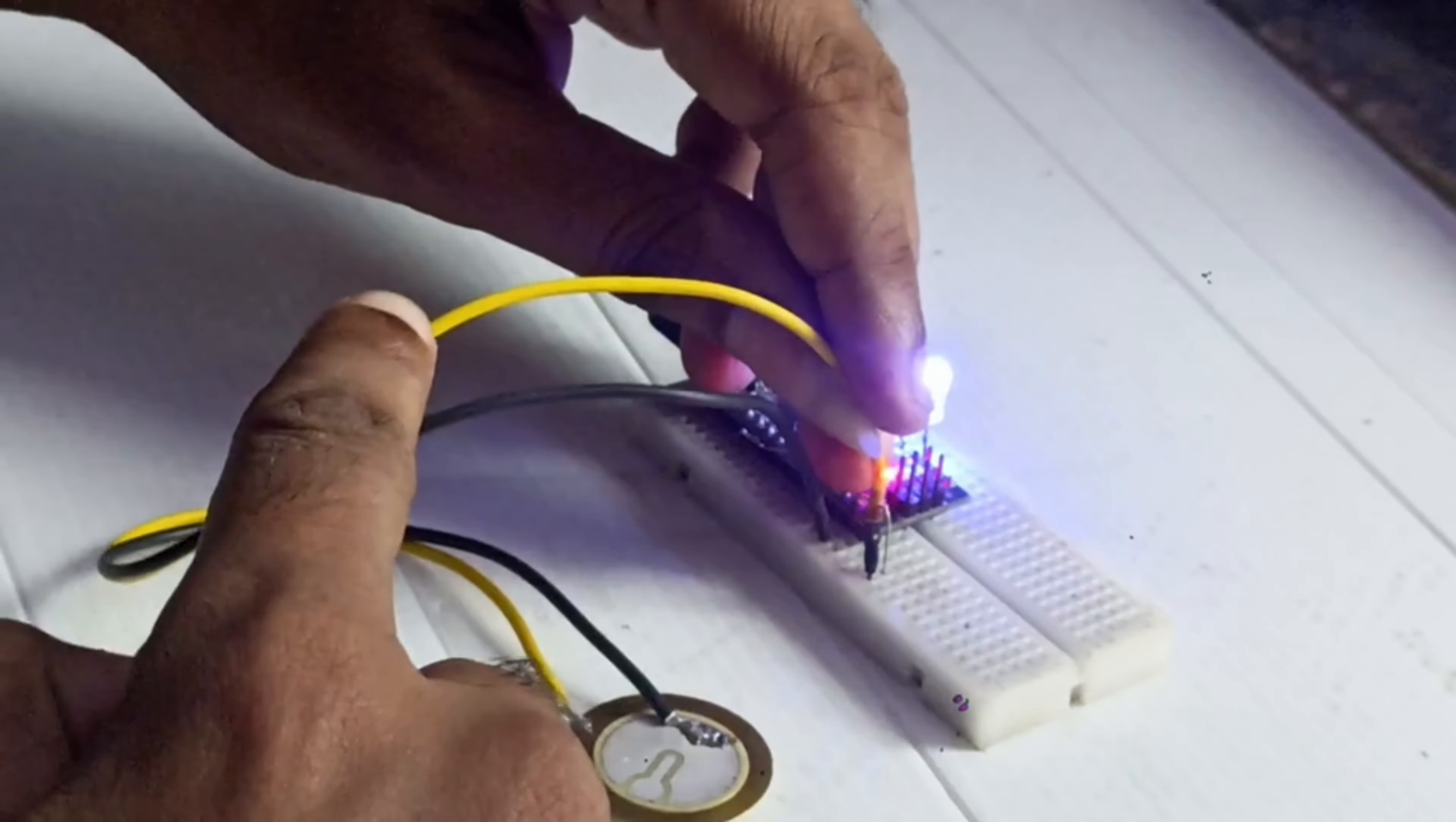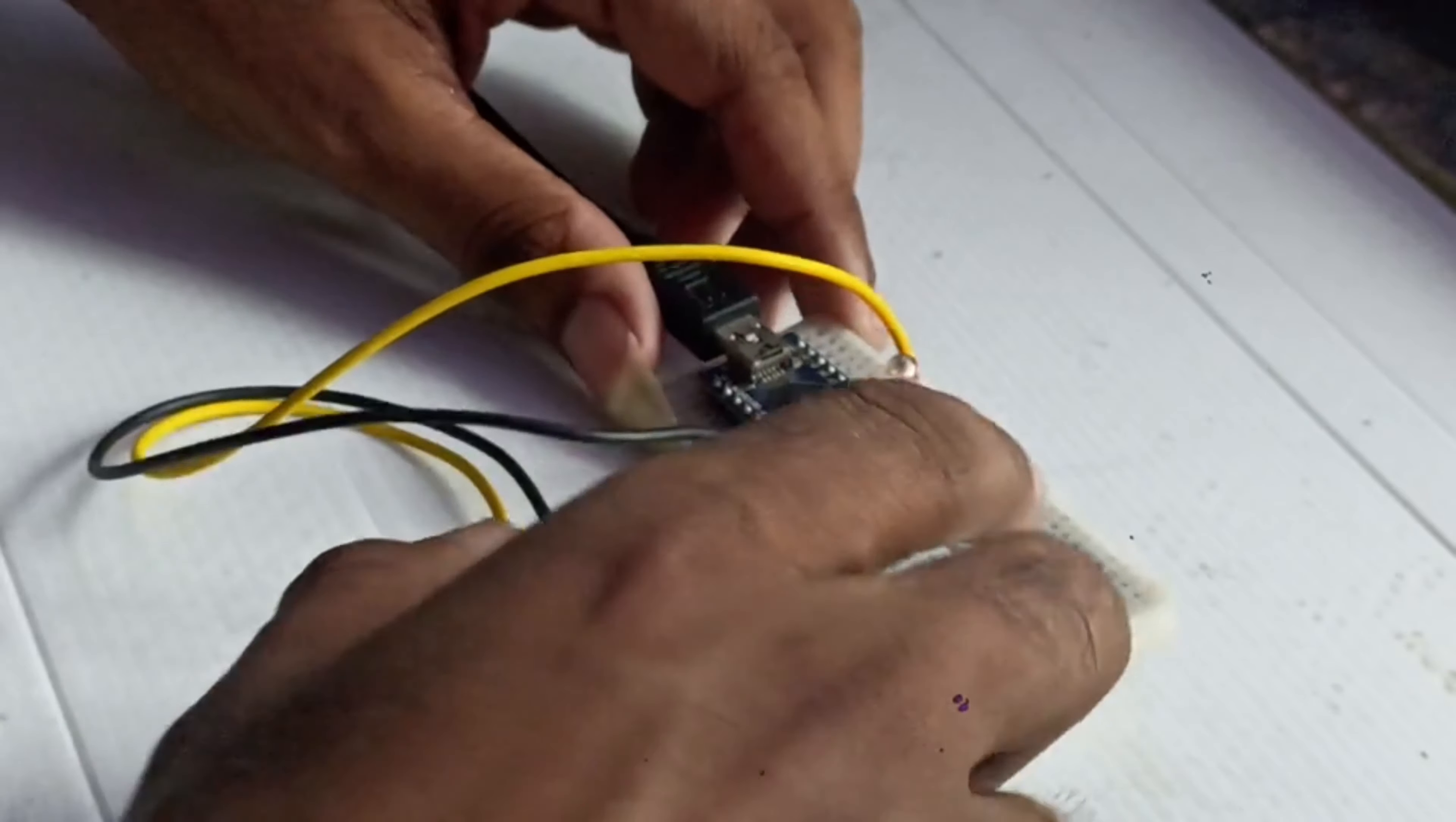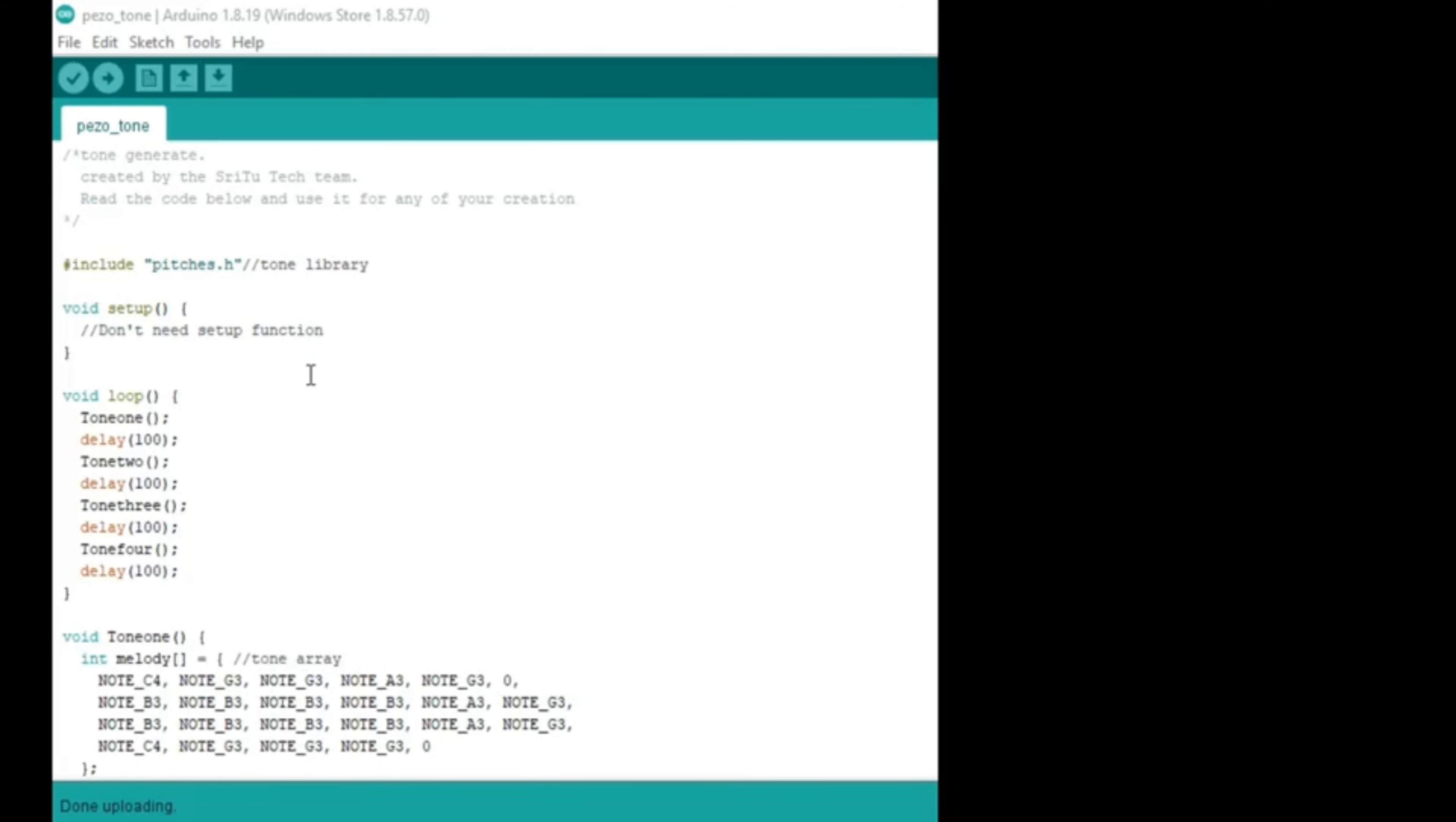Now we are going to use it as an output device. Connection is very simple, just remove the positive wire and connect it to the D3 pin of the Arduino Nano and it's all done. To run it as an output device we have to upload a separate code. So we have to open this Arduino IDE code and this is little different.